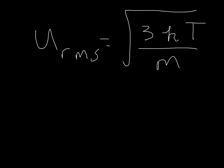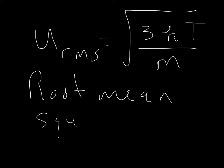u rms — the u rms is known as the root mean square velocity, or is the square root of the average of the squared velocity. So basically, what is that? It's the average velocity. What it's saying here is that the average velocity is equal to the square root of three times K, which is the Boltzmann's constant, times T divided by m, which is the mass of a particular gas particle.